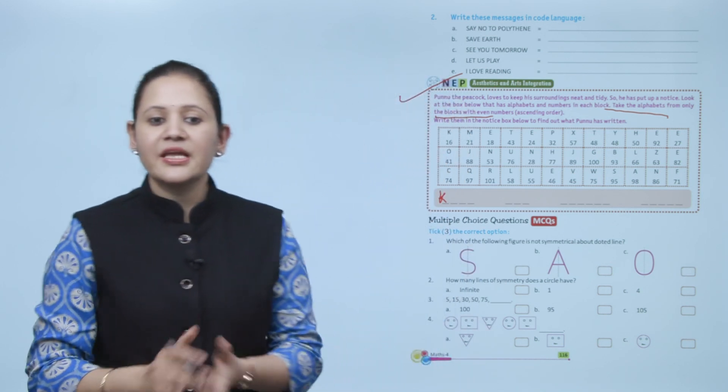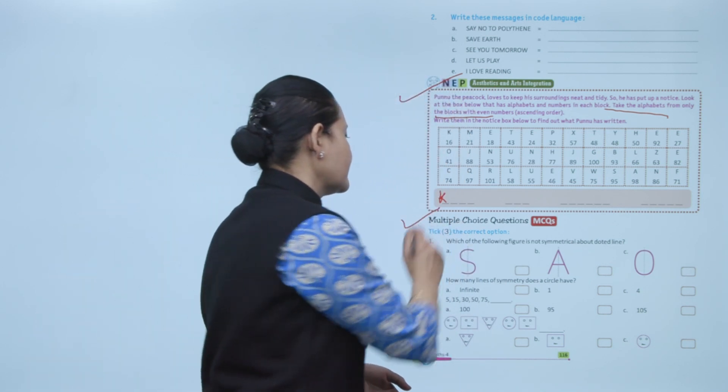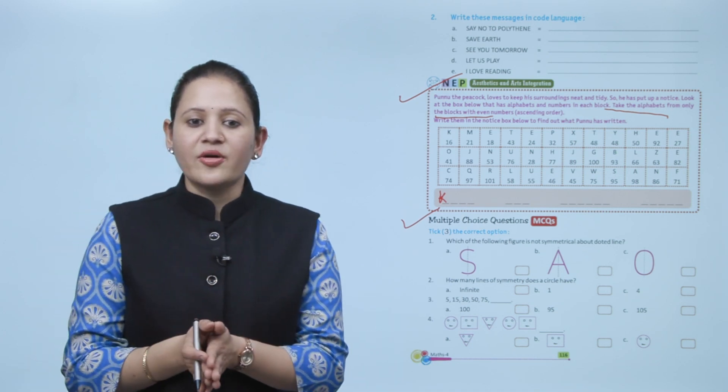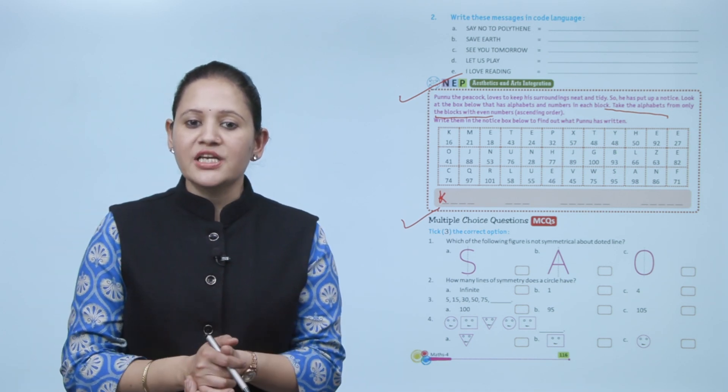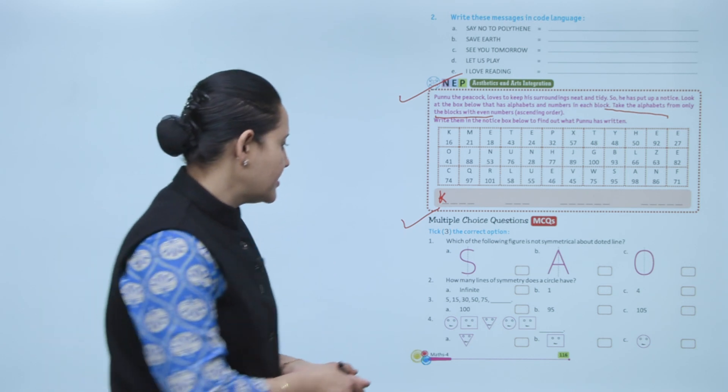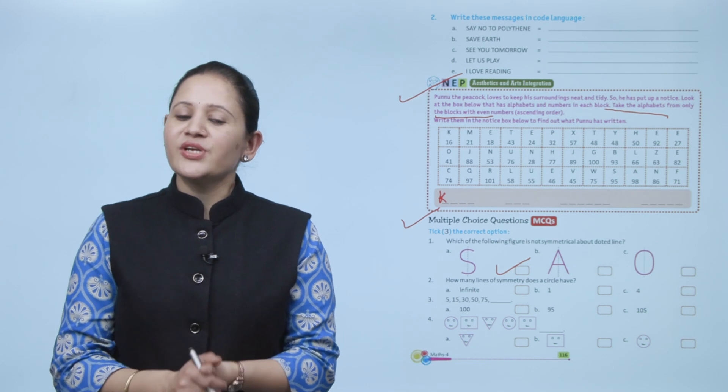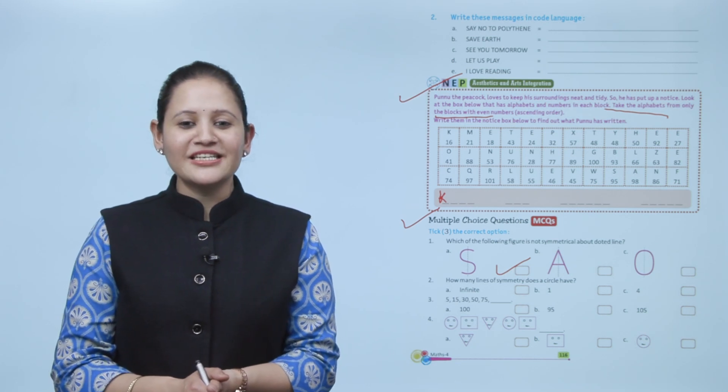Next is Multiple Choice Questions. Tick the correct option: which of the following figures is not symmetrical about the dotted line? This one - so A is the correct option. So here we end the chapter. I hope you understand it well. Now you practice it.